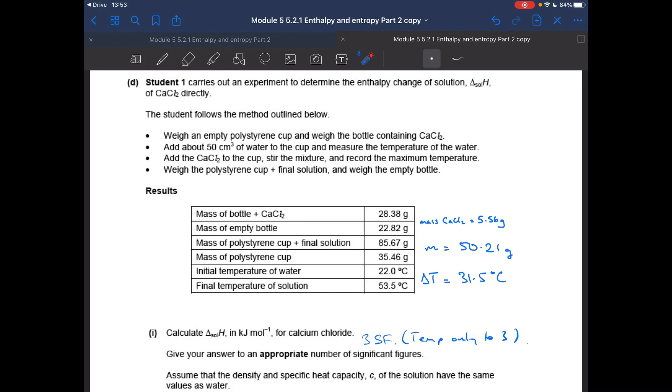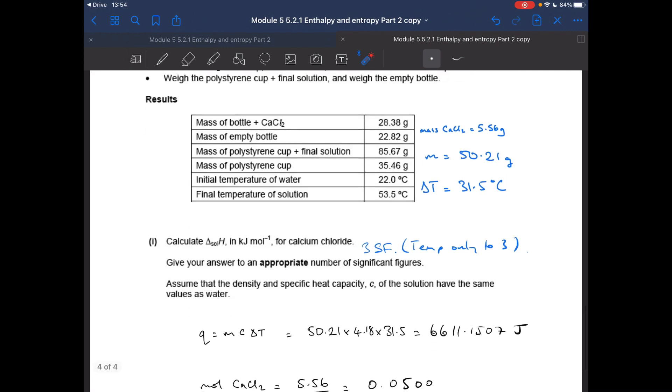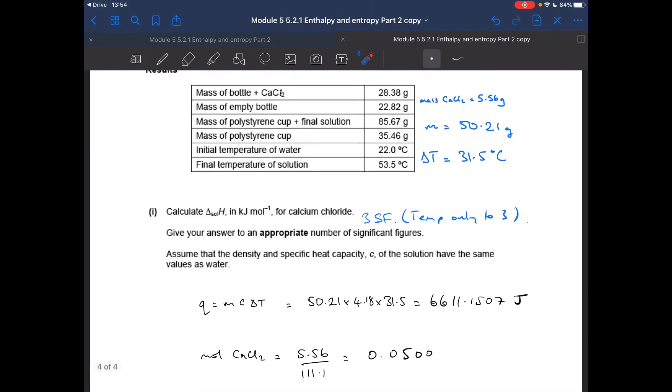So it's a calorimetry calculation. So the first thing we do is Q equals MC delta T, so M, 50.21, not that mass, that's a common mistake, people use the wrong mass. We're going to use that to calculate the moles of calcium chloride. It's the mass of the thing in the cup that goes into the equation for M. So MC delta T gives us 6611.1507 joules. We're then going to calculate the moles of calcium chloride used, so mass over MR, so that 5.56 over the MR of CaCl2 is that, so that gives us that many moles.